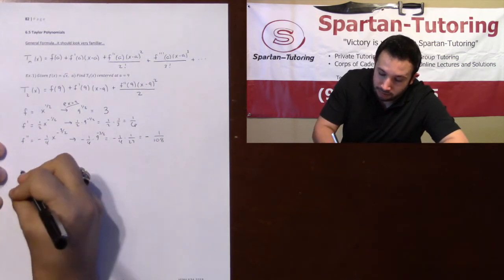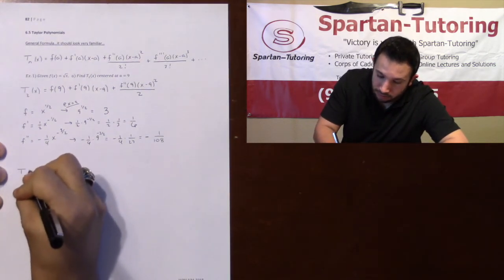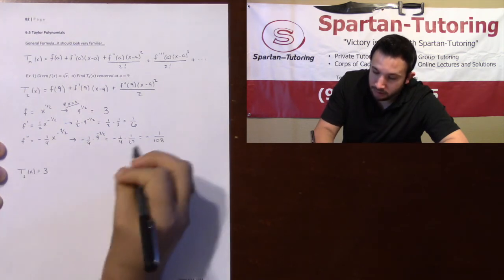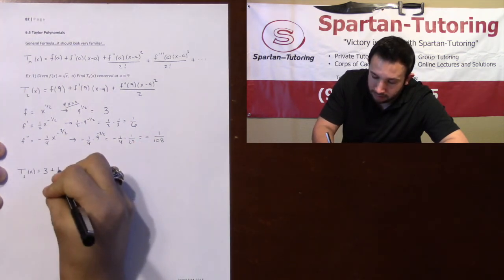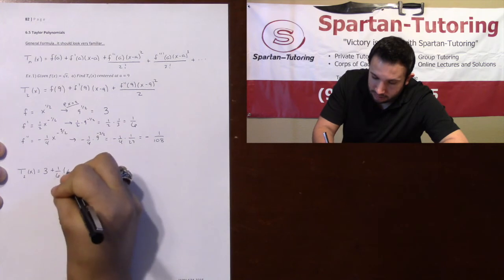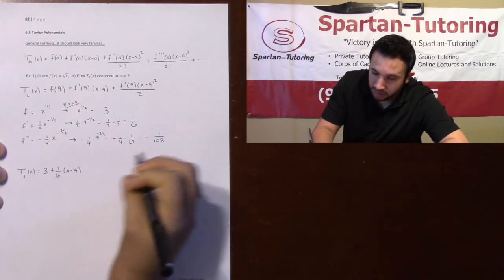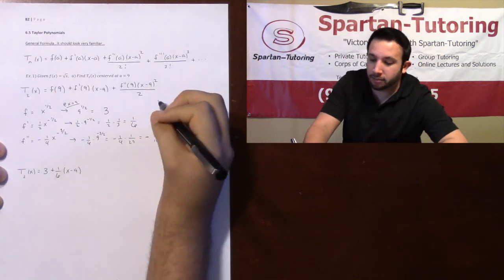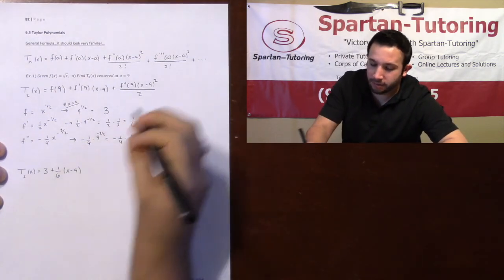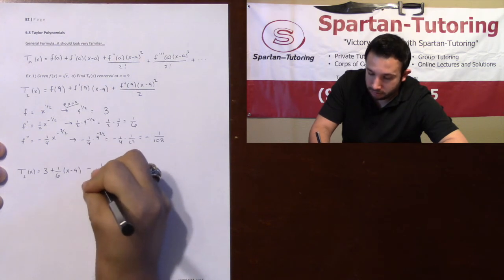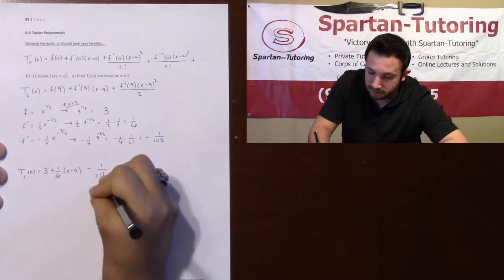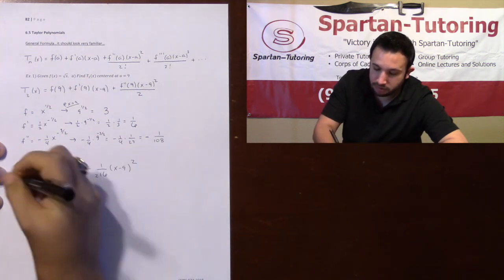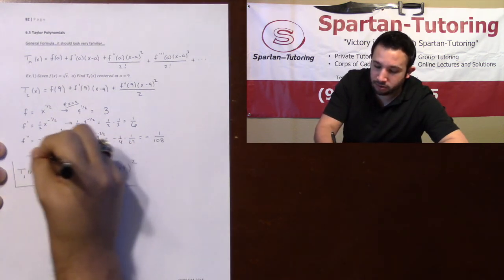Once I have these three numbers, plug it into these three slots and you're done. Your final answer, your second degree Taylor polynomial, is going to be f of 9 which is 3, plus f prime of 9 so it's one sixth times x minus 9, plus f double prime of 9, so it's negative 108, but since I'm going to go ahead and divide that by 2, 108 divided by 2, that'll be one over 216 times x minus 9 squared.